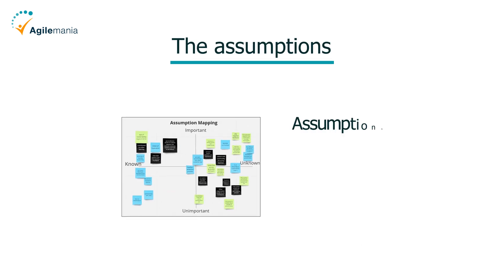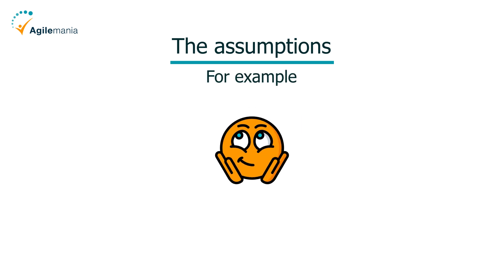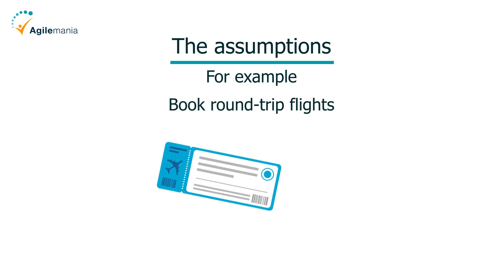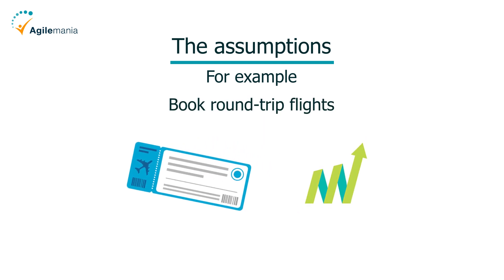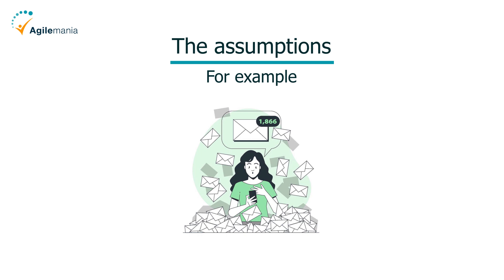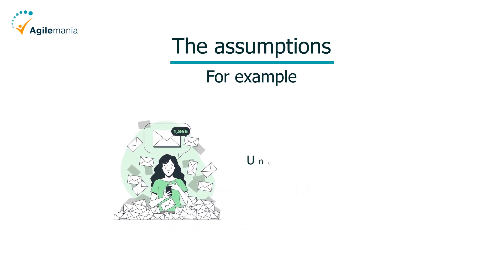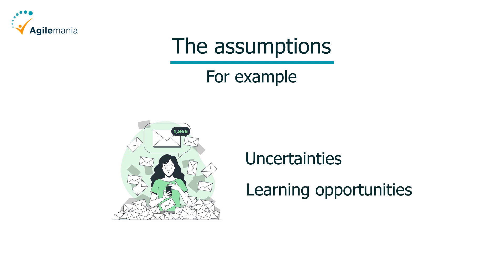The fourth element is assumptions — notes or comments that you add to the map where you document the assumptions, hypotheses, questions, feedback, or any other information that you need to validate or clarify with your users and stakeholders. For example, you could have an assumption that most travelers prefer to book round-trip flights, a hypothesis that offering a loyalty program will increase customer retention, a question about how to handle cancellations and refunds, or feedback that the user interface is too cluttered. The assumptions represent the uncertainties and the learning opportunities that you need to address throughout your product development.